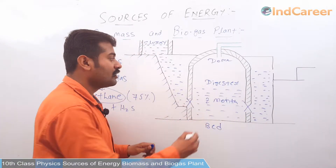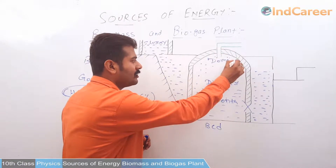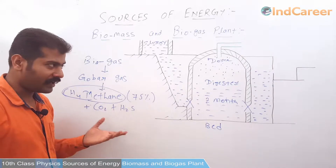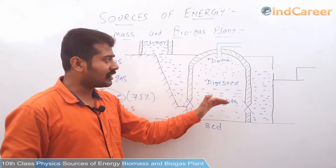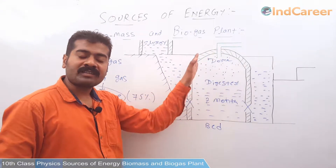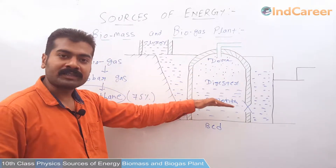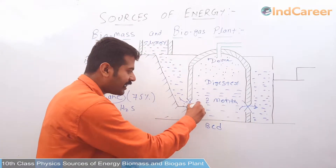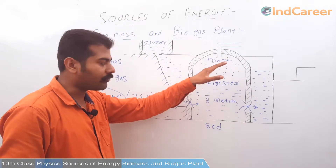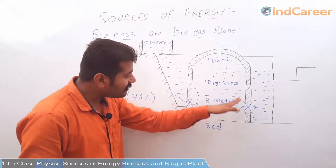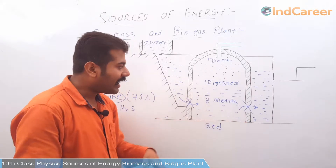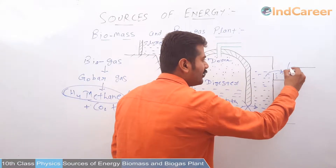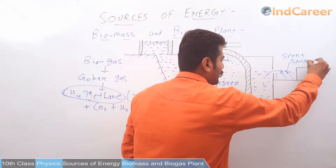After two months, the biogas fills the dome. This biogas consists of methane, carbon dioxide, and hydrogen sulfide. As the biomass converts into biogas, it starts increasing the pressure inside the dome, which compresses the remaining biomass. The used biomass moves to the out-gate side of the digester. As the pressure increases, the slurry moves to that side of the digester — this is called spent slurry.